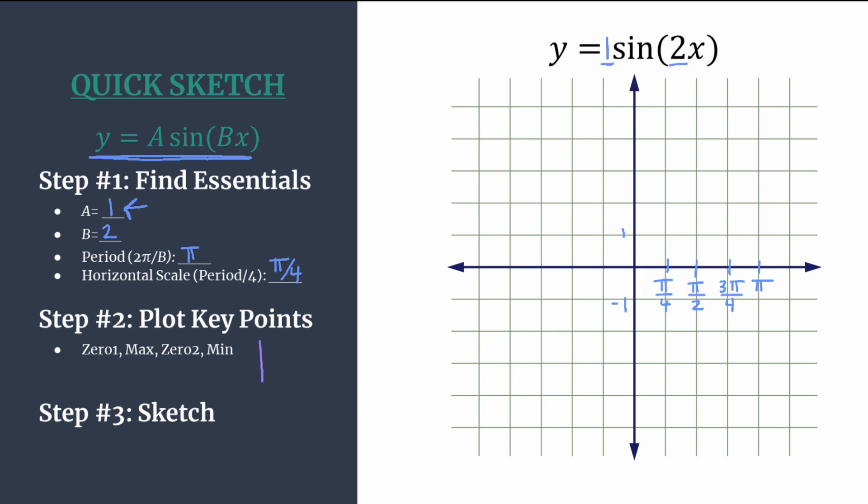Let's plot our key points and remind ourselves here that a sine graph, a parent sine graph, looks like this. So it starts at the origin. The pattern is zero, max, zero, min, and then repeat.